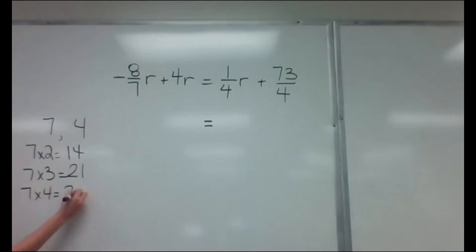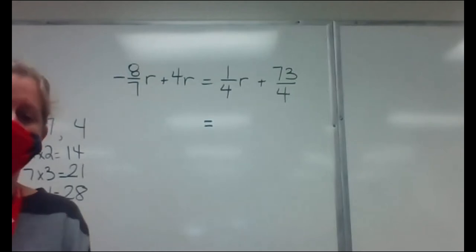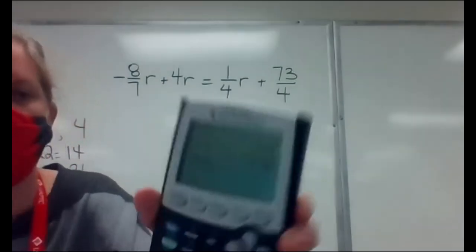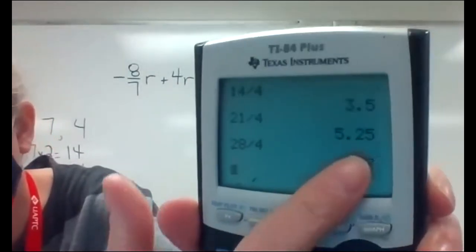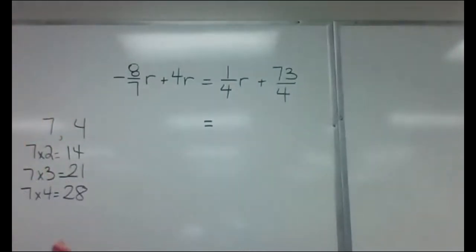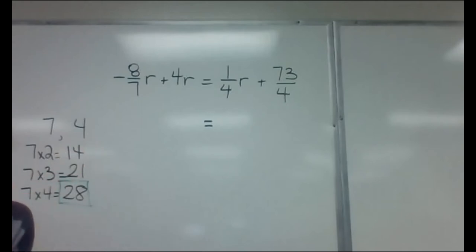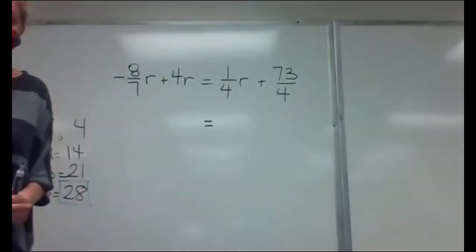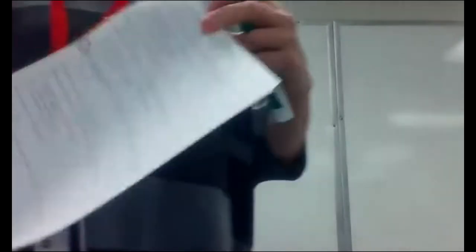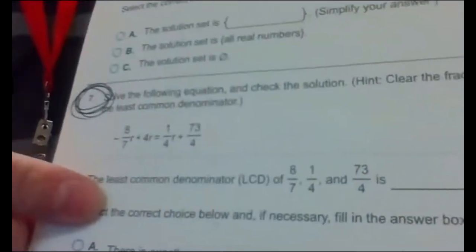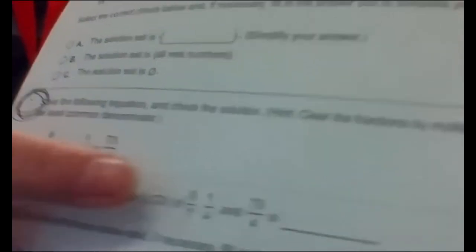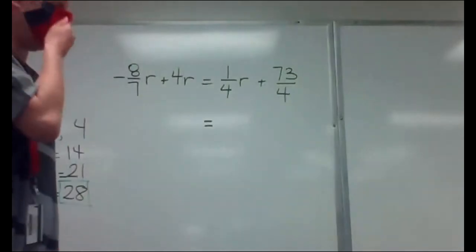The next thing that seven goes into is 28. When you check 28 divided by four, it does go in there evenly — you get a whole number. So 28 is the first number that both seven and four will go into. We're going to use that 28 to our advantage. The first thing it will ask you is to find the least common denominator, which would be 28.